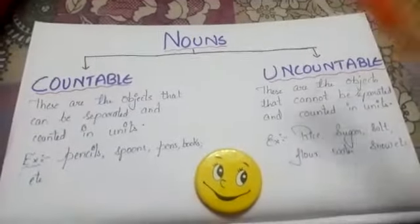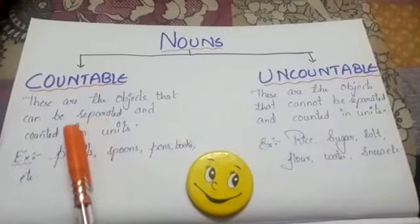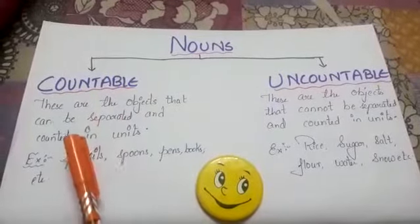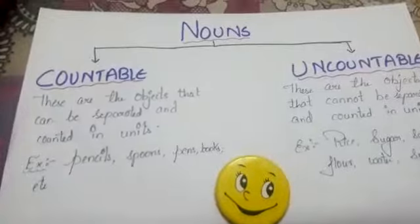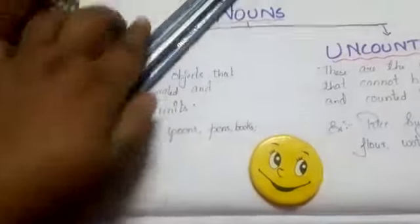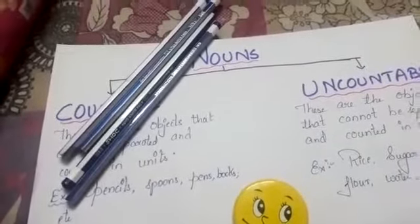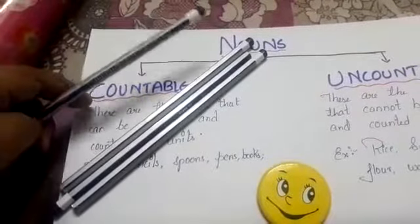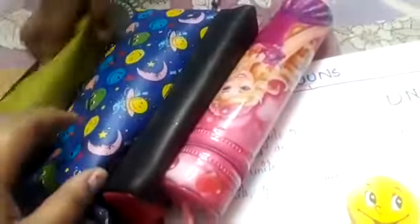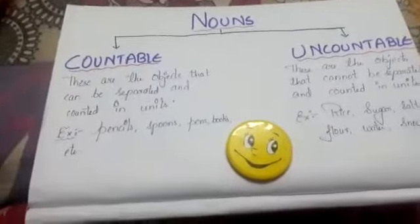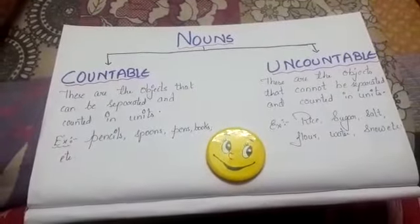Here on the screen, nouns can be divided into two types: countable nouns and uncountable nouns. Countable nouns refer to things or objects that can be separately counted in units — we can count them individually. For example, I have pencils here and everyone can count them. One, two, three, and four. Now I have pouches here — I can count one, two, three, and four. So we are easily able to count the number of objects, and this refers to countable nouns.